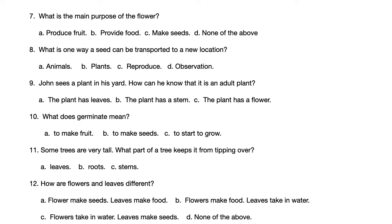Number 12. How are flowers and leaves different? A. Flowers make seeds, leaves make food. B. Flowers make food, leaves take in water. C. Flowers take in water, leaves make seeds. D. None of the above.